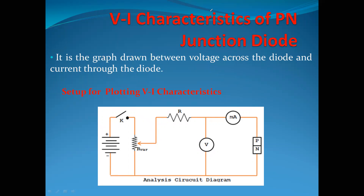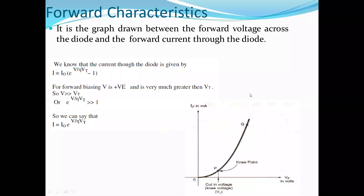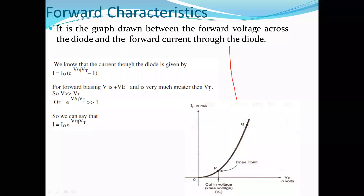What is this graph? How do we interpret it? In VI characteristics, we draw the forward characteristics first. The forward characteristics are drawn in the first quadrant. Why do we draw forward characteristics in the first quadrant?